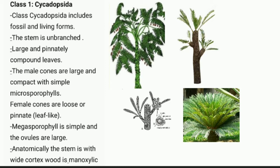Anatomically, the stem has a wide cortex, and the wood is manoxylic type. In manoxylic wood, a large amount of parenchyma is present. An example of manoxylic wood is the Cycas plant. On the screen, you can see images of a few Cycadopsida plants.